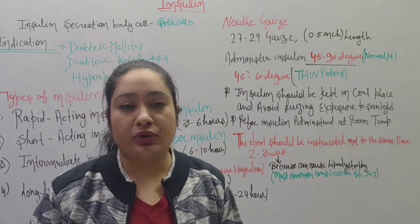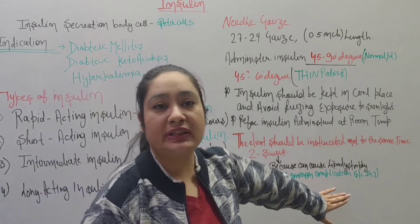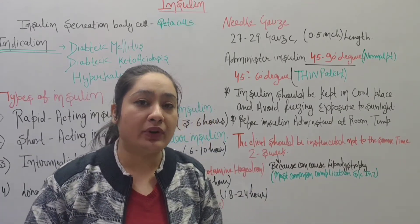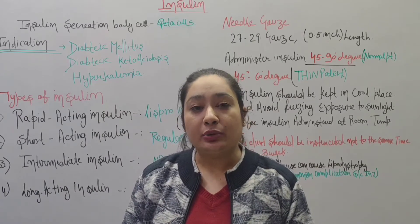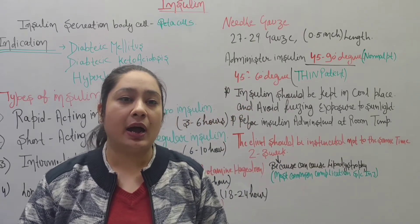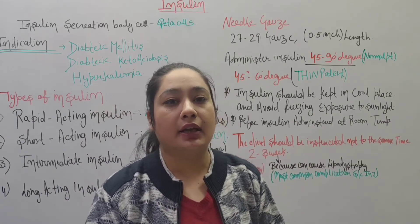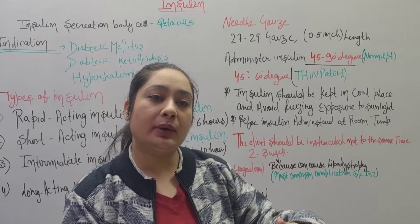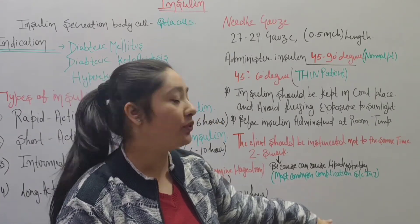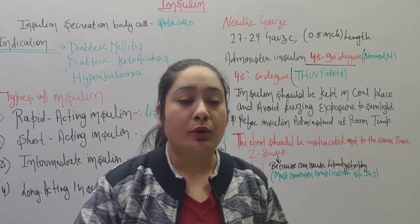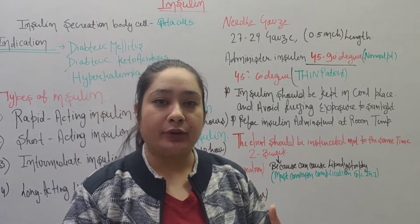If you use insulin at the same site for more than 2 to 3 weeks, it can cause lipodystrophy — a common complication of subcutaneous injection. In lipodystrophy, you may notice the skin appears pinkish and bluish, and absorption is affected. Always advise the patient to change the injection site every 2 to 3 weeks.